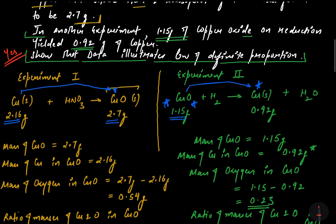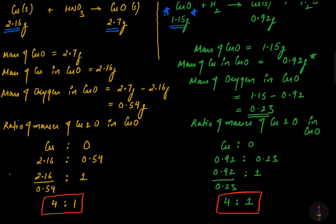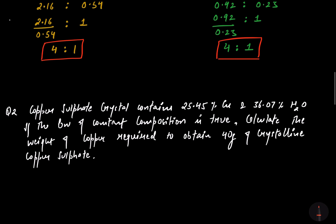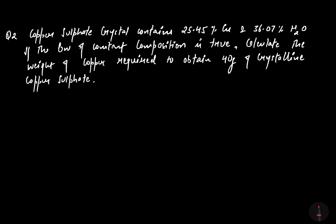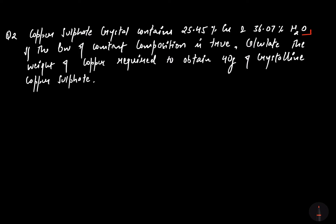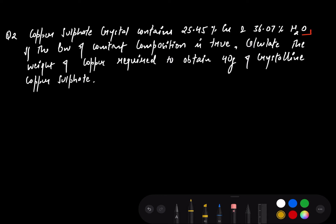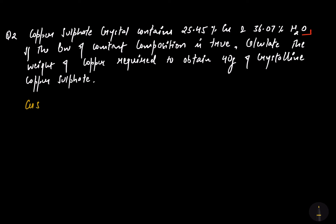Hopefully you understood the first numerical. Now Numerical 2: copper sulfate crystals (CuSO₄·5H₂O) contain 25.45% copper and 36.07% H₂O.